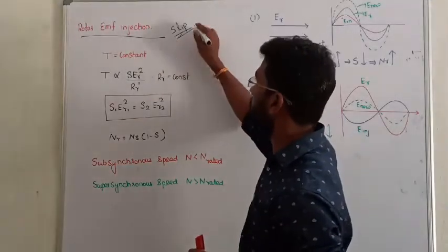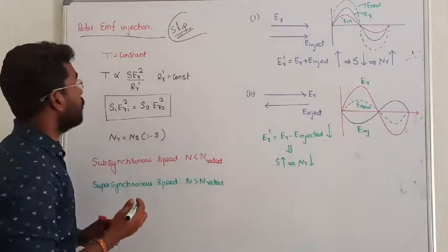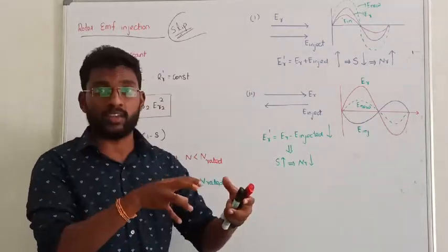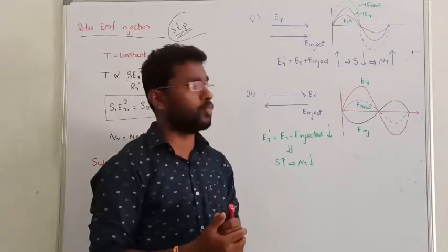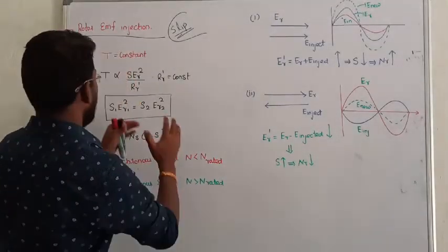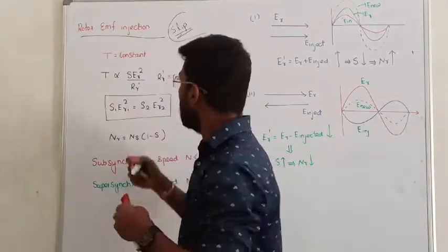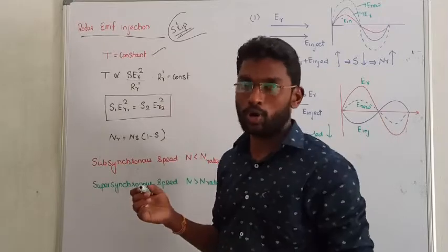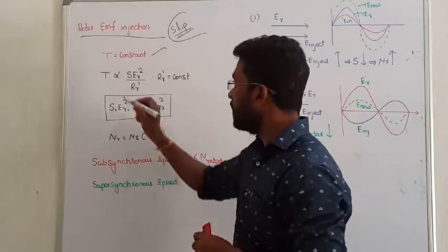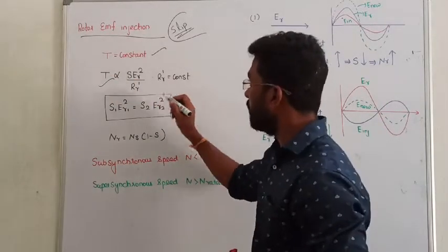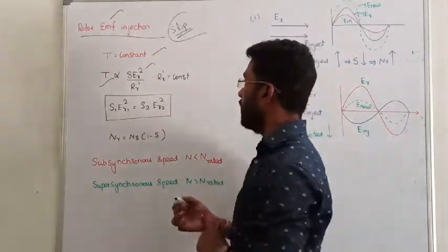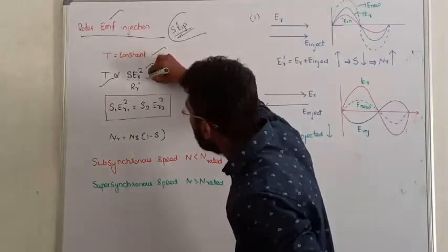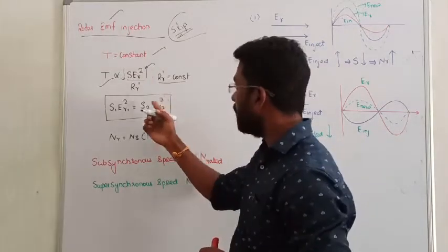In this method, we are going to inject some induced EMF into the rotor circuit to control the speed. The torque must be kept constant throughout. Using the rotor torque equation under running conditions, we are going to vary the value of injected EMF while rotor resistance stays fixed. If we increase the injected rotor EMF, slip will decrease, since both are opposite — the resultant product remains constant.